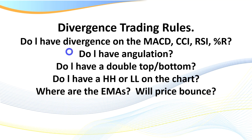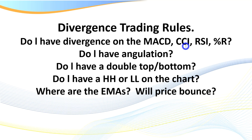Let's go through some basic rules that are absolutely non-negotiable when it comes to trading divergence. First, do I have divergence on a MACD? You can use a number of different oscillators — MACD, CCI set to an 8 to 14 period, RSI, or Larry Williams' Percent R, which works brilliantly. I've got a custom MACD that I use, tuned for very short-term divergence. You can also be a pure price action trader and trade purely off the pattern.